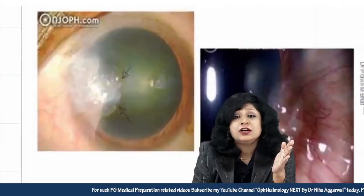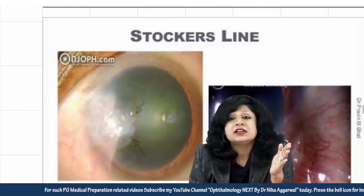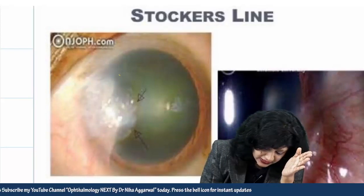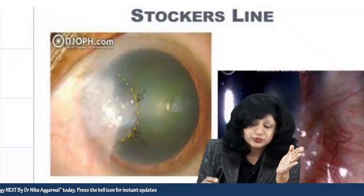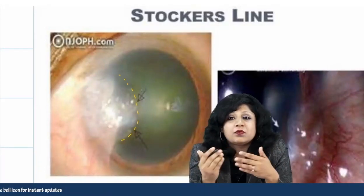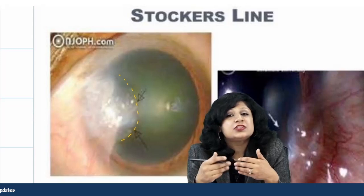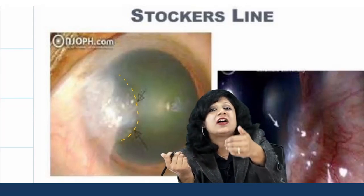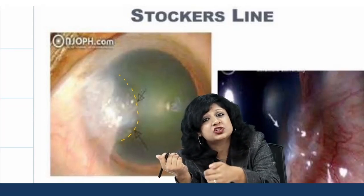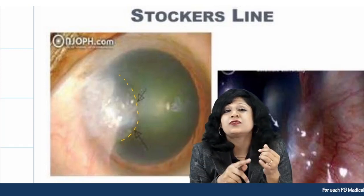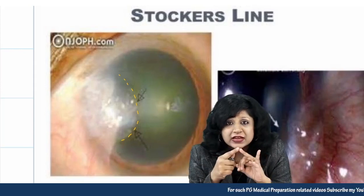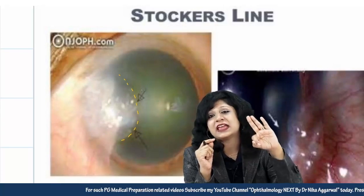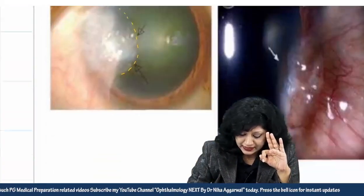Next is Stocker's line. This is a brownish line due to iron deposition anterior to the advancing head of the pterygium. So Stocker's line is found in pterygium, caused by iron deposition anterior to the advancing head.